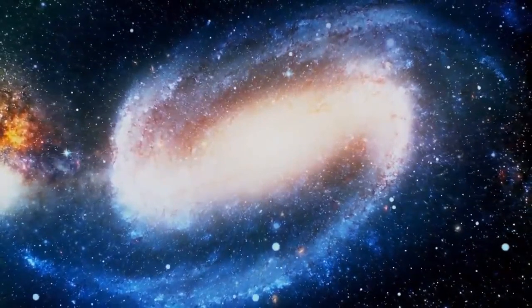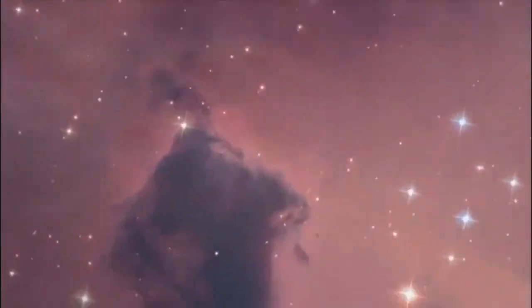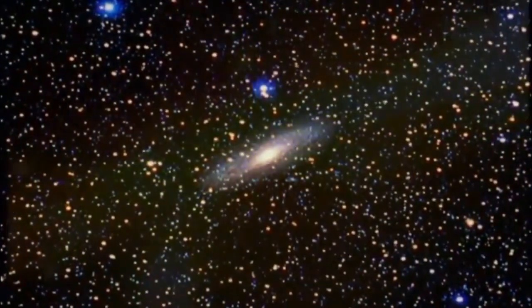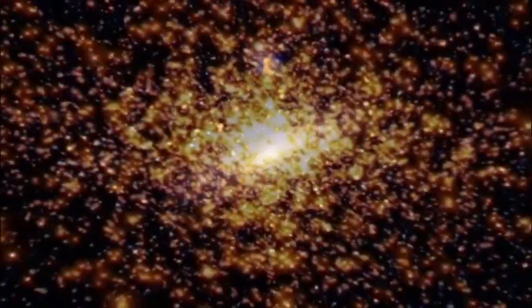Scientists have long wondered why galaxies formed in seemingly random patterns across space. Now scientists know it's because of dark matter's gravitational pull. The universe is not uniform at all, but has voids. It has clumps. It seems to have bubble-like regions. What we now believe is due to dark matter.